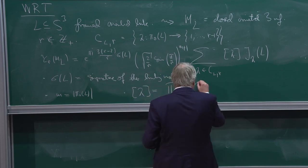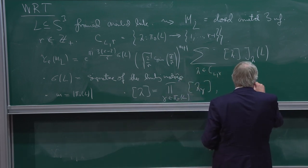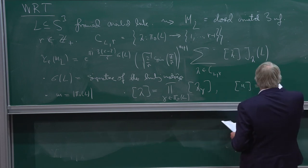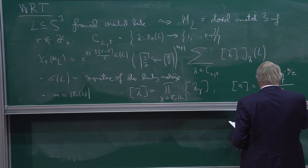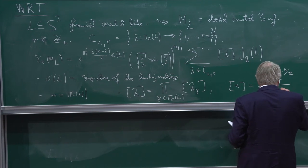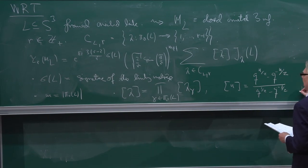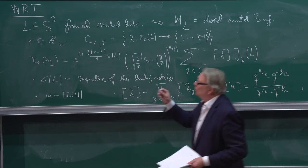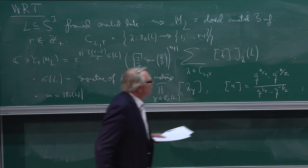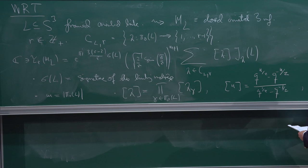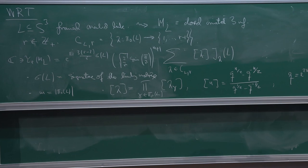The quantum integer is q^(n/2) − q^(−n/2) divided by q^(1/2) − q^(−1/2). And here, since this is supposed to be a complex number, q = e^(2πi/r), this specific root of unity. J_λ(L) is the colored Jones polynomial of L, and it lies in C[q, q⁻¹], where we can think of q as a formal parameter, but we can insert this value for q if we like.